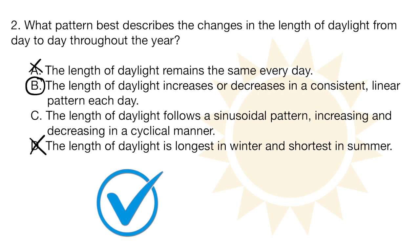And so the correct answer here is going to be option B. We actually get an increase or decrease in a consistent pattern each day. And that's basically from the winter solstice, which is the shortest day, and it's going to increase all the way up until we get to the summer solstice, which is the longest day. And so we're either increasing consistently or we're decreasing consistently throughout the year.